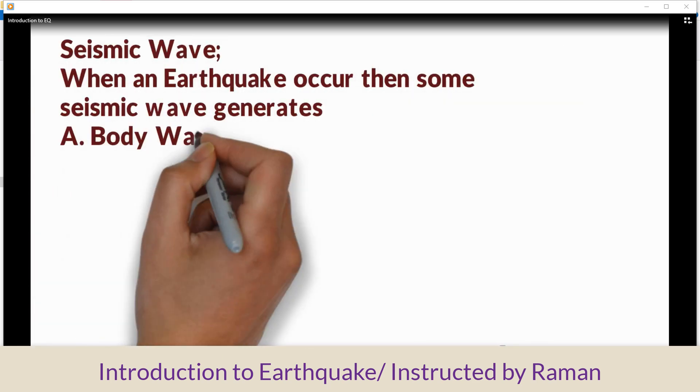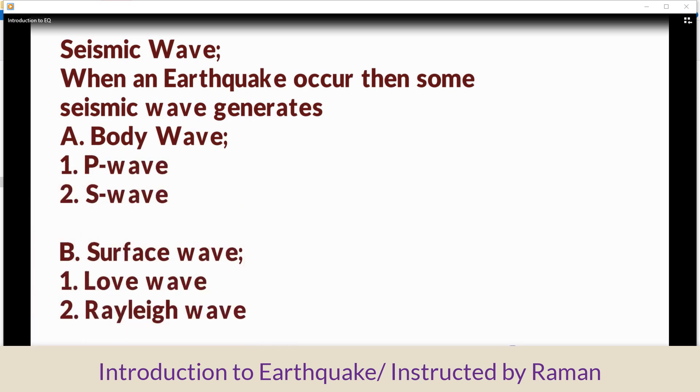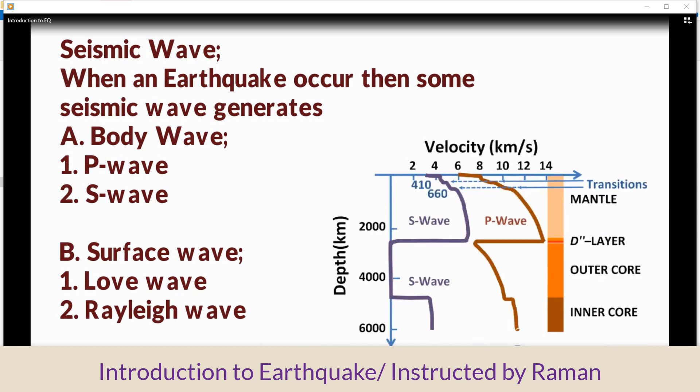Seismic wave: When an earthquake occurs, seismic waves are generated, including body waves (P-wave and S-wave) and surface waves (Love wave and Rayleigh wave).